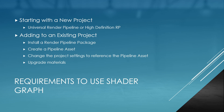If you want to add shader graph to an existing Unity project it's a lot more complicated, which is why I'd recommend using a new project and just importing your assets. For an existing project you have to go through at least three steps, possibly four if you have existing assets. You would need to install a render pipeline package, create a pipeline asset, change the project settings to reference the pipeline asset, and lastly upgrade existing materials to use that pipeline asset.